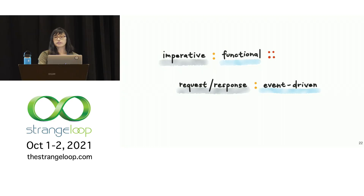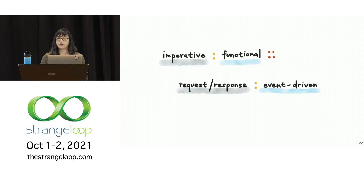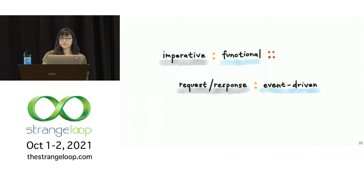I see this as analogous to the divide between imperative and functional programming. The request-response model of service communication matches our sequential imperative programming model of making in-place state changes on a single computer, and we've seen how that isn't perfectly suited for a distributed environment. Functional programming, in contrast, describes behavior in terms of the immutable input and output values of pure functions, not in terms of mutating objects in place. If we model the way our services communicate more functionally, what would our systems look like?